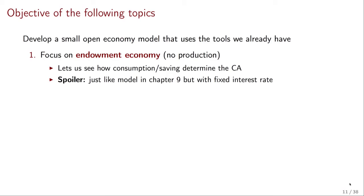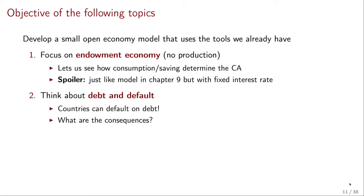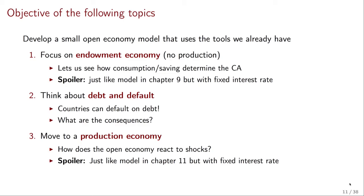Then we're going to use the endowment economy to think about debt and default in countries. When countries can default on debt, that of course has consequences — specifically, the point of this section is to think about what those consequences are for a country's ability to trade with the rest of the world. Finally, we'll move to a production economy, introducing production and asking how the open economy reacts to different shocks. This will look exactly like the production economy model from chapter eleven with two periods, but with a fixed interest rate, which we'll discuss in future videos.